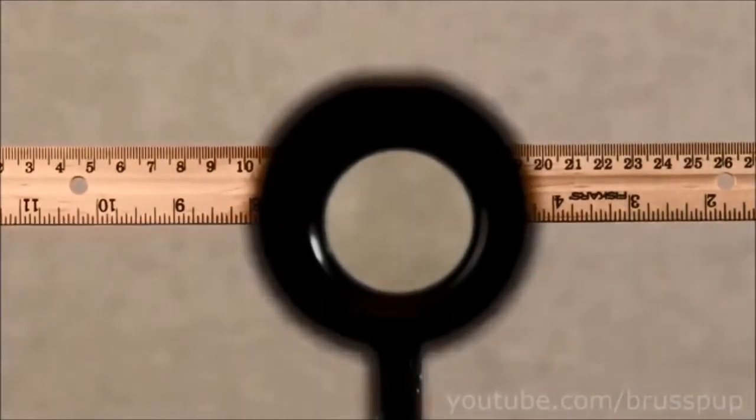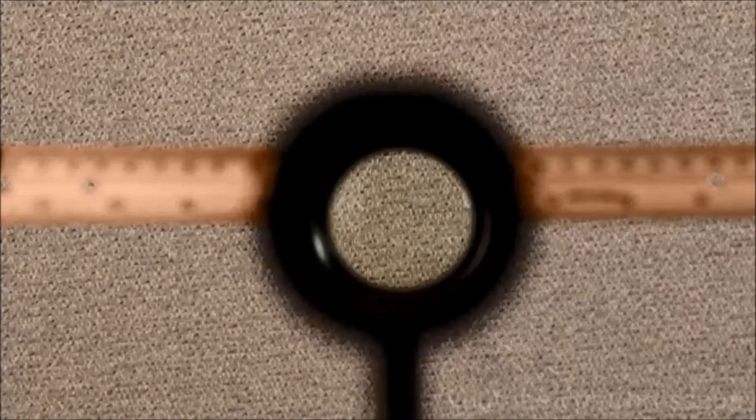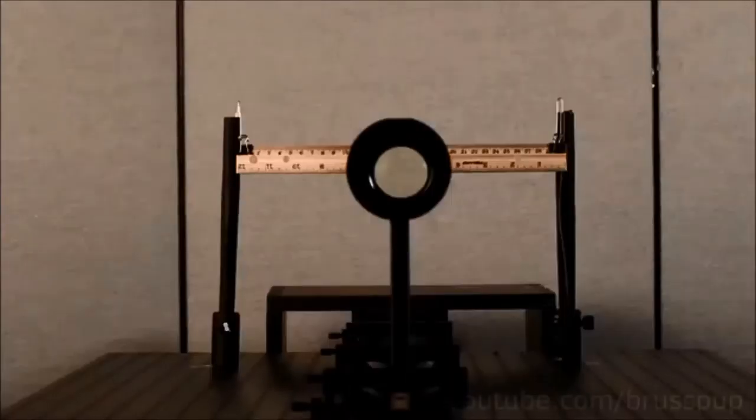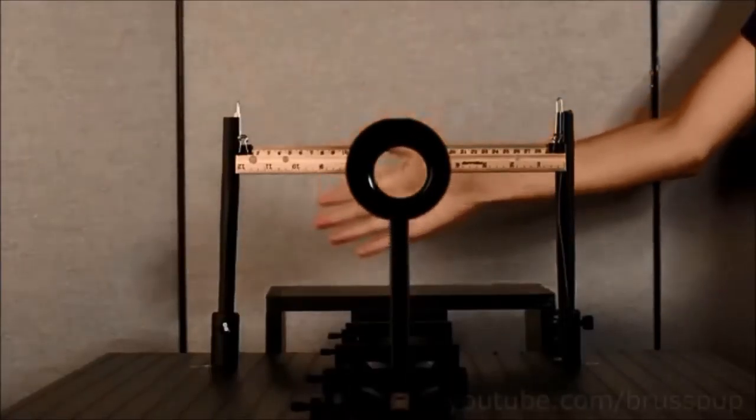To show some basic principles behind some forms of cloaking, we will examine the Rochester cloaking device, a very simple device that uses lenses to bend light so that the object in front of the lens seems to disappear.